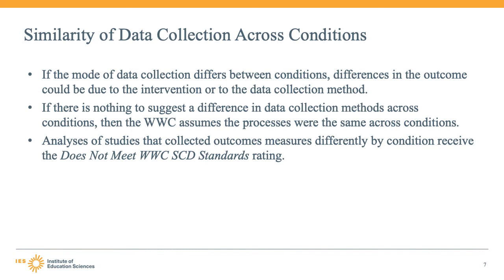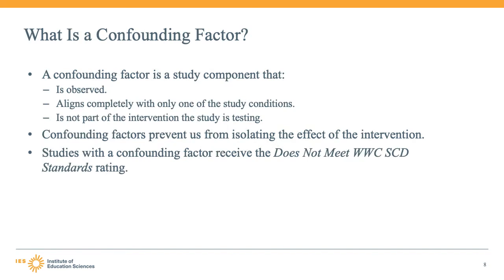Now that we have discussed the WWC outcome requirements, we will discuss another non-design component that can affect the WWC rating of a single-case design study — confounding factors. Confounding factors are components of a study that make it difficult or impossible to estimate the true effect of an intervention because the effect of the intervention cannot be distinguished from the effect of that component. The WWC's definition of a confounding factor has three aspects.